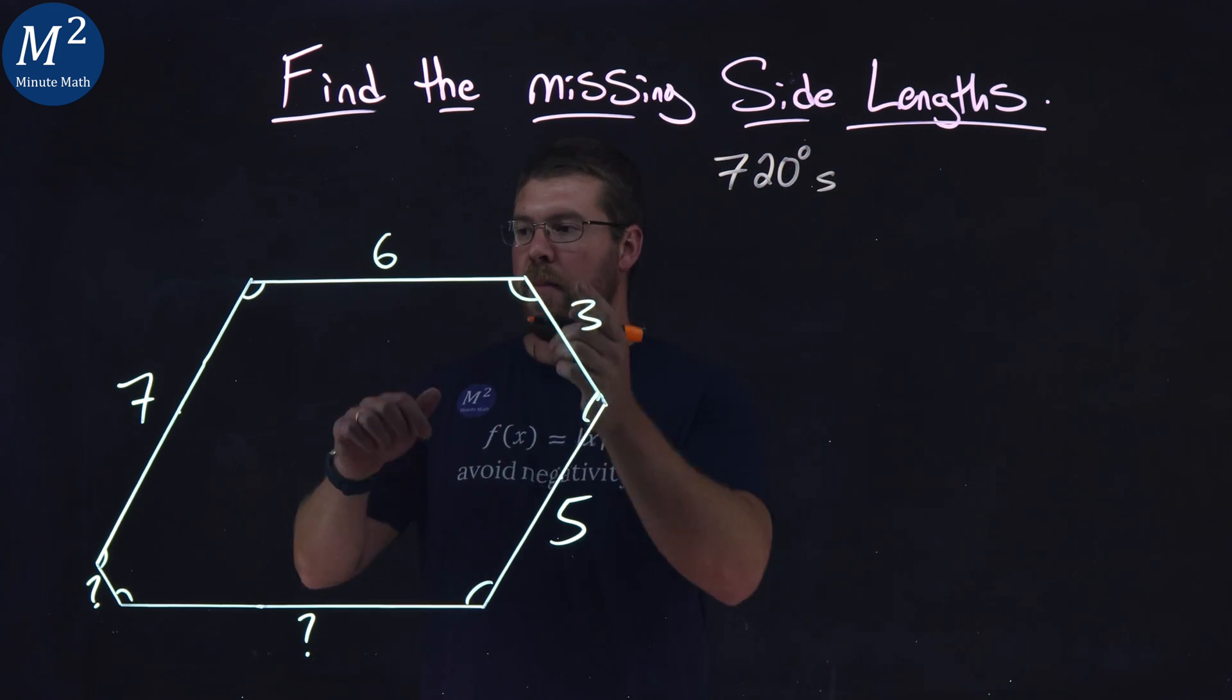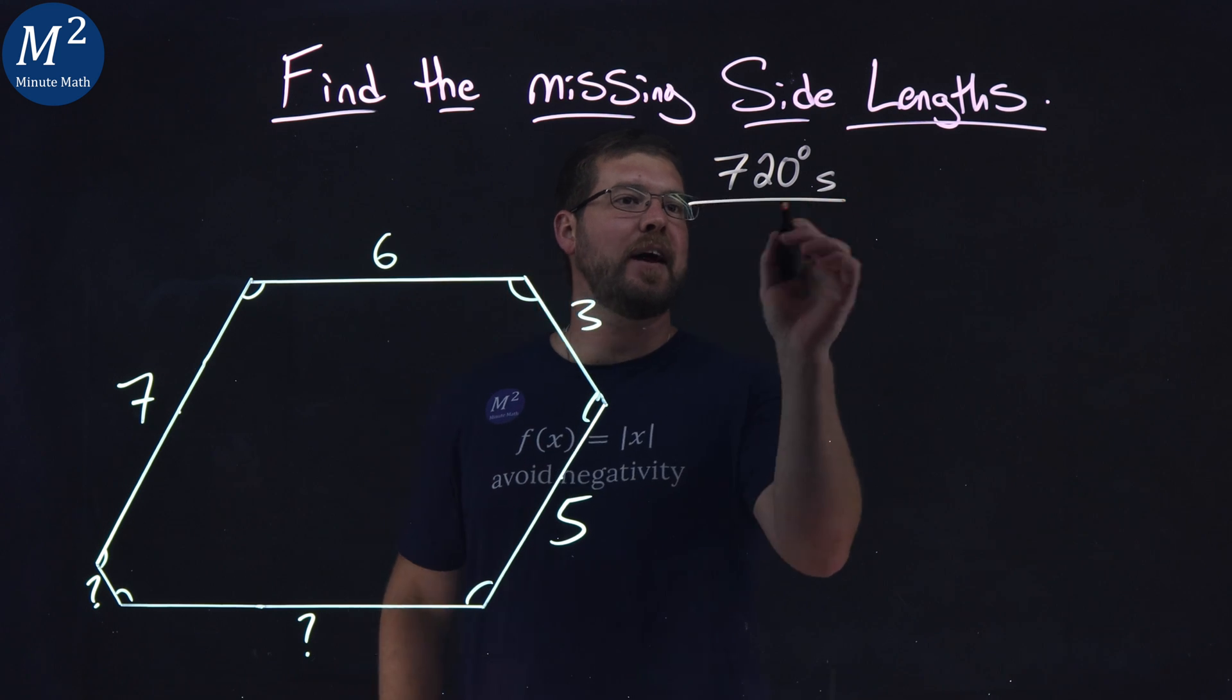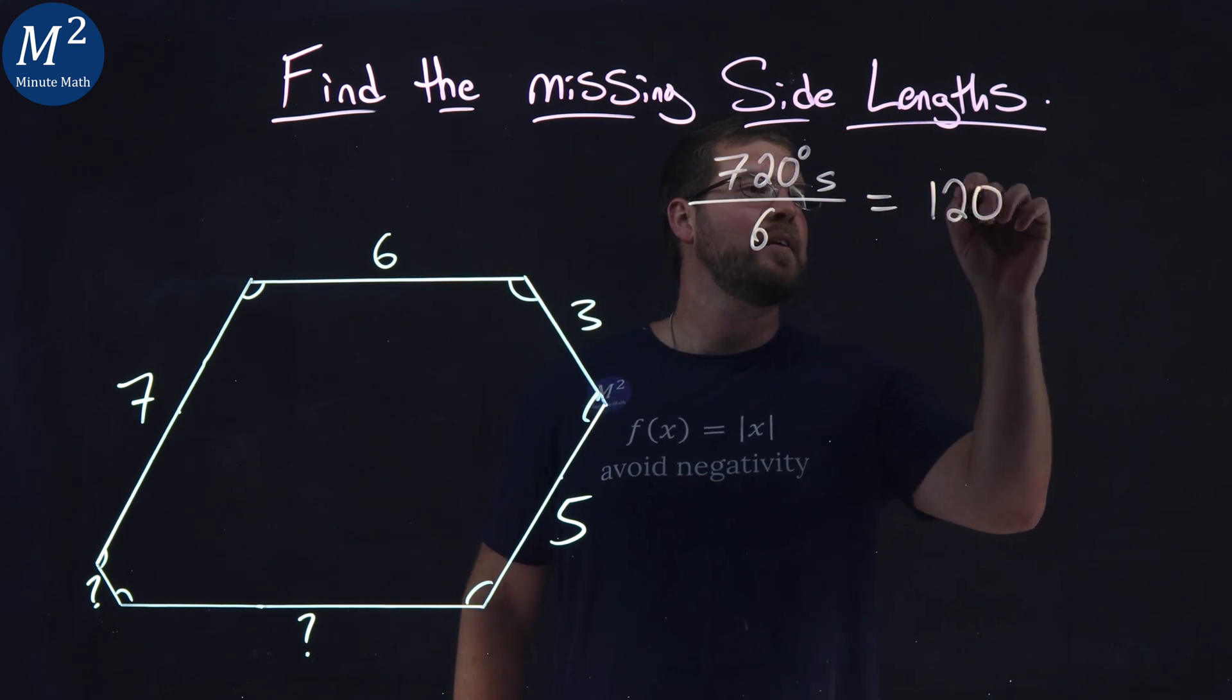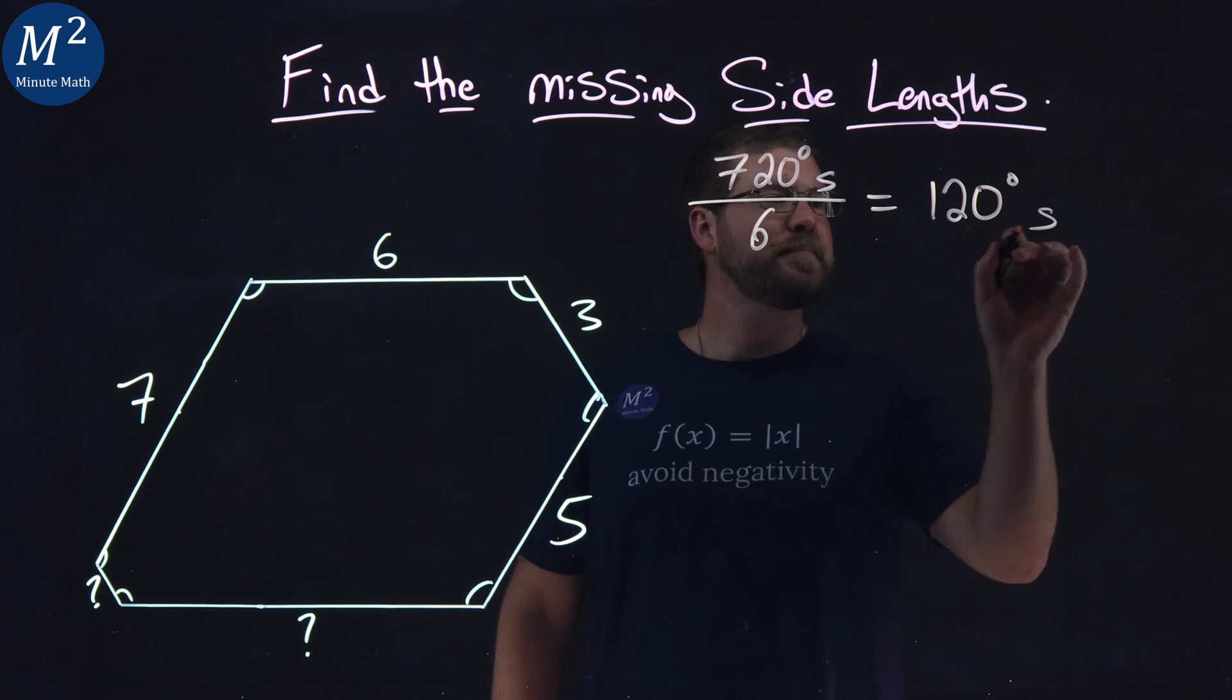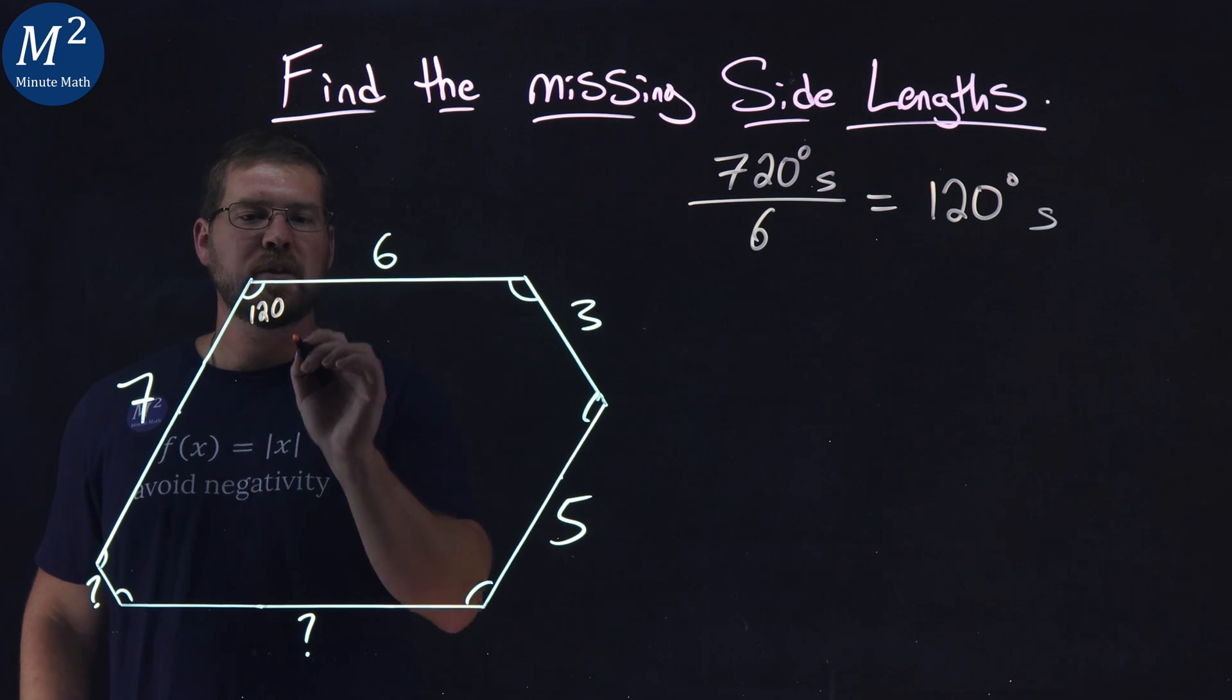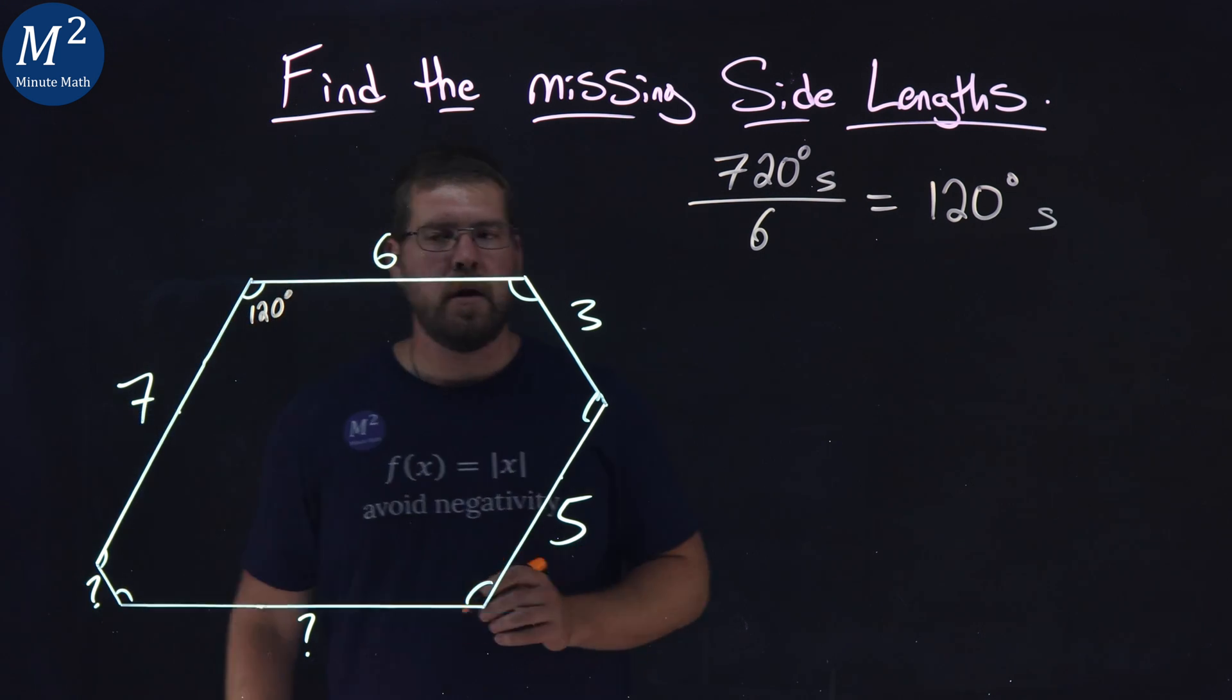Okay. And there is one, two, three, four, five, six interior angles. Divide that by six, and each one is 120 degrees. Okay. So each interior angle measures out to be 120.